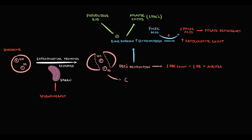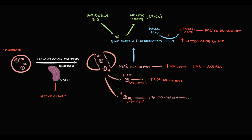With red blood cell destruction, lactate dehydrogenase enters the blood, so with hemolysis the concentration of LDH in the blood increases. Elevation of LDH is a well-known marker of hemolysis. In addition, with destruction of red blood cells, free hemoglobin enters the blood. Free hemoglobin undergoes degradation to protoporphyrin and then to bilirubin, and increasing bilirubin concentration in the blood can cause jaundice and greatly increases the risk of bilirubin gallstone formation.